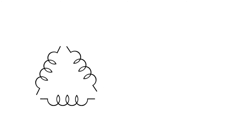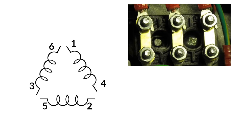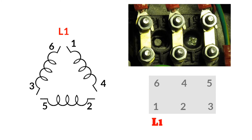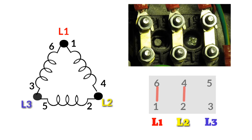In delta connection, the opposite ends of 3 coils are connected together. In other words, the end of each coil is connected with the starting point of another coil, and 3 wires are taken out from the coil joints. There is no neutral or star point connected in delta connection. To make a delta connection: line 1, connect number 1 terminal to number 6 terminal; line 2, connect number 2 terminal to number 4 terminal; line 3, connect number 3 terminal to number 5 terminal.